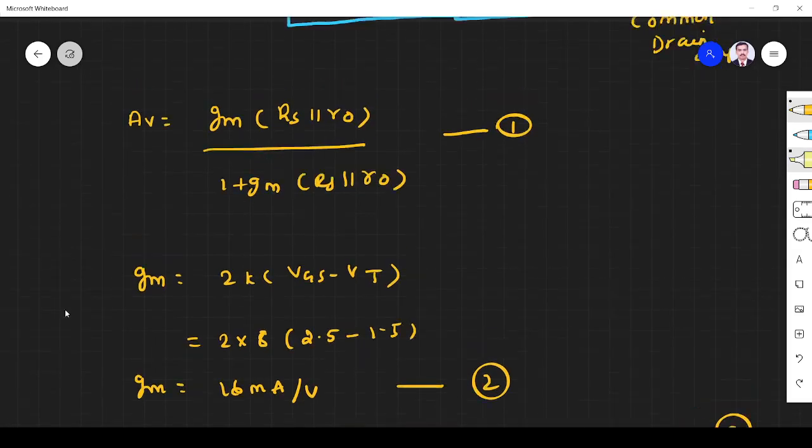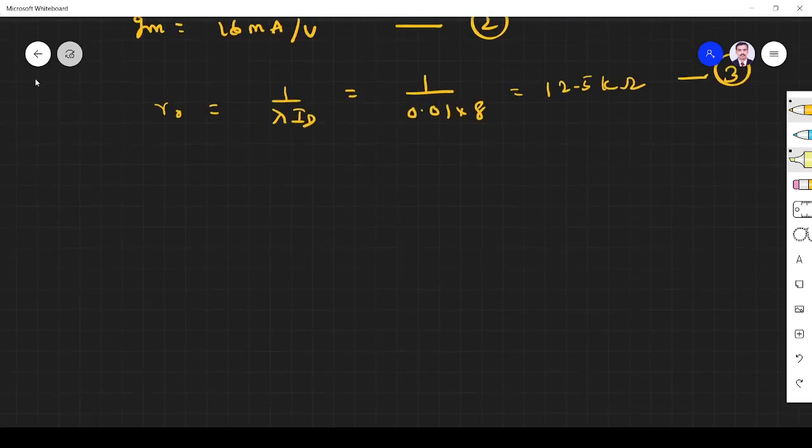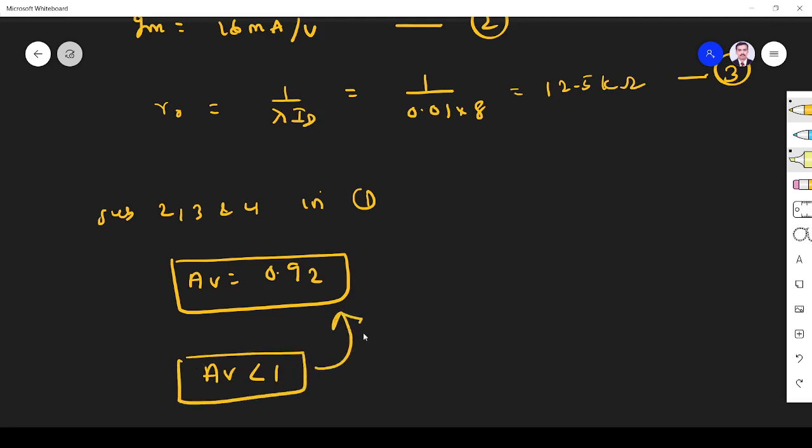So gm we found, ro we found. Rs, what is Rs? This is our Rs, so Rs is one kilo ohm. We have to substitute in equation one. We get AV is equal to 2.92. Already we know that in common drain amplifier gain must be less than one, so that is proven here.